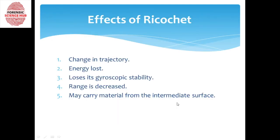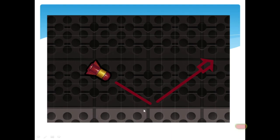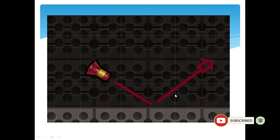There are five main effects of ricochet. First is change in trajectory. As is clear from the diagram, the bullet was supposed to go one way but went another way — so the direction of the bullet's trajectory completely changed because of ricochet.